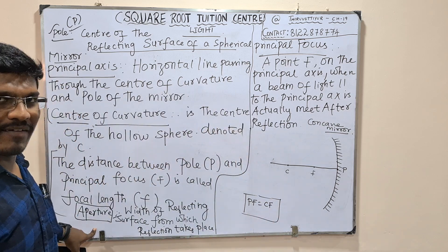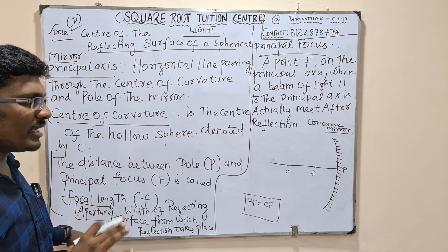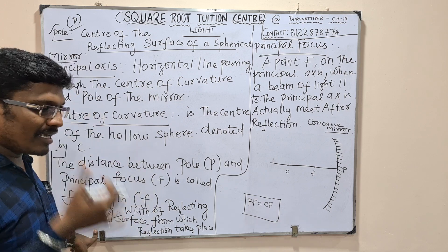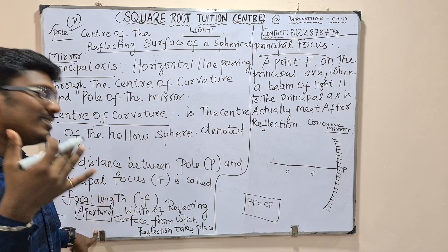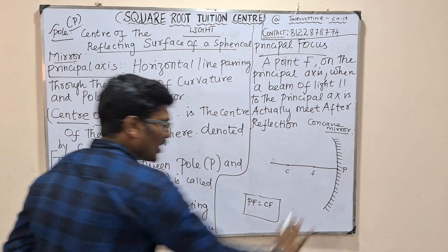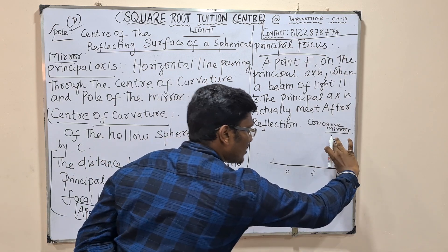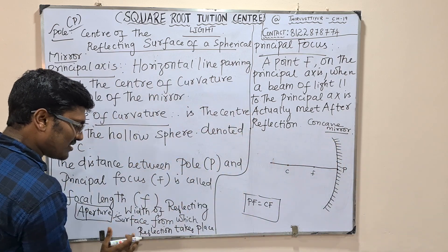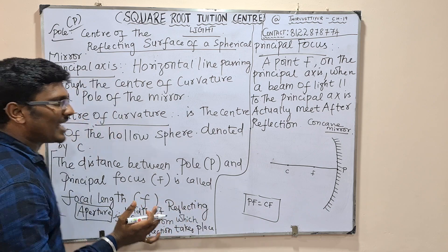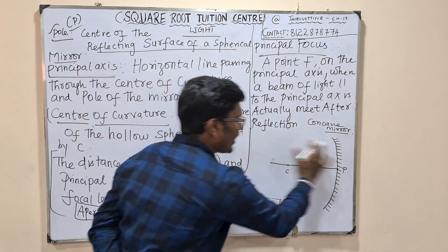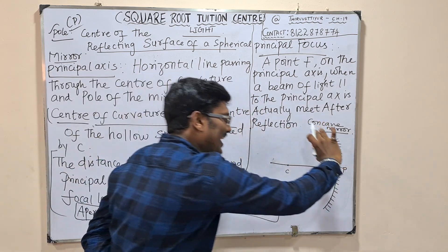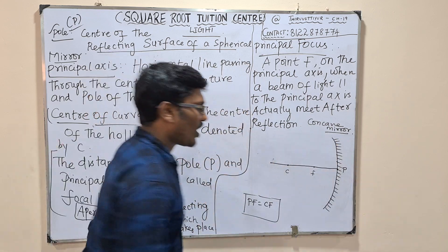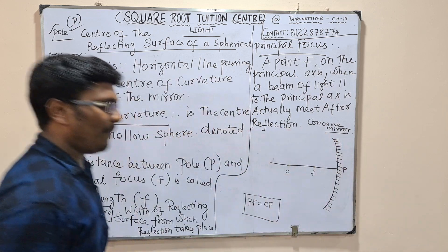Next we have the word aperture. The aperture is the width of the reflecting surface — from which the reflection takes place. We can also refer to it in terms of height, the level of aperture.